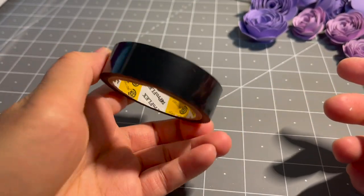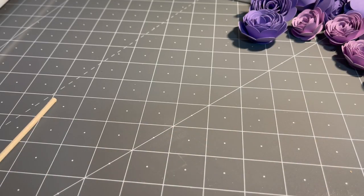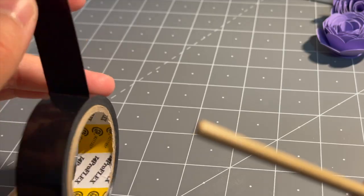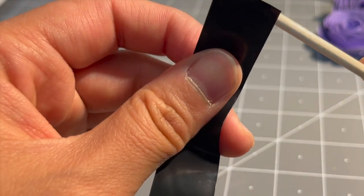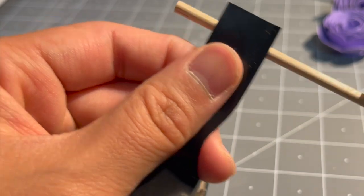And now we're gonna use this electrical tape, or you can use any tape. This will just serve as a stopper so that when you roll the flowers it will still be in place.